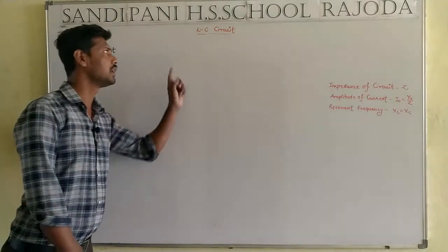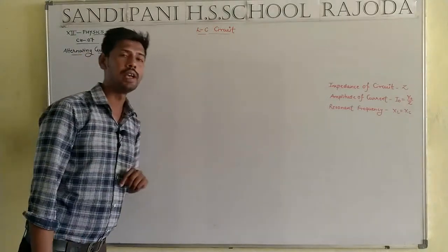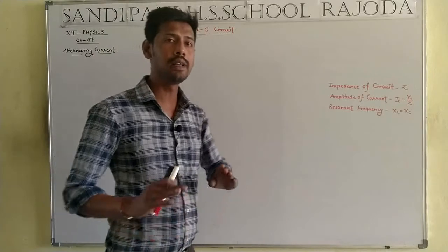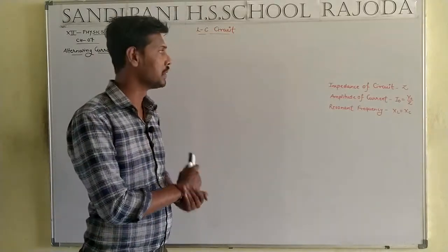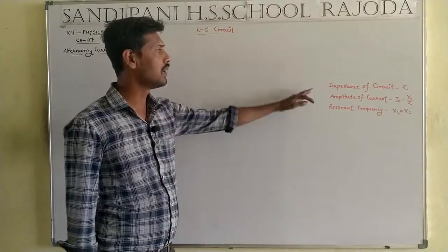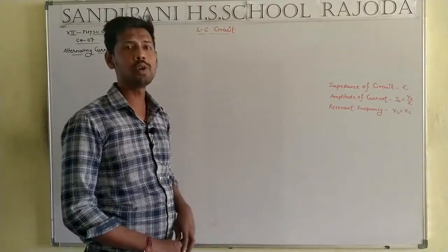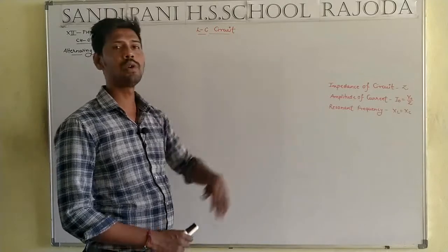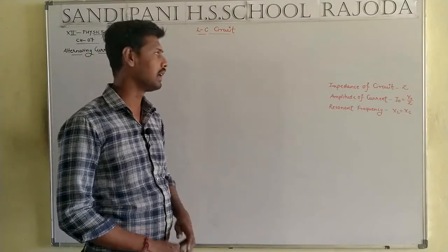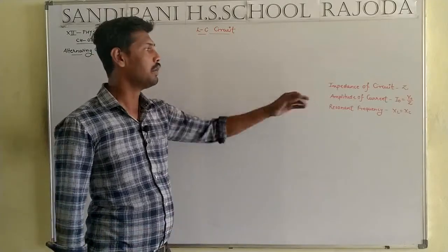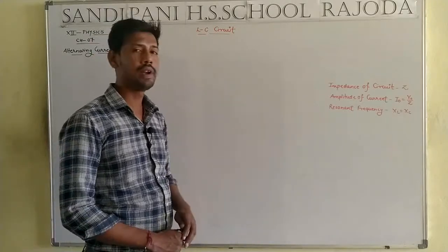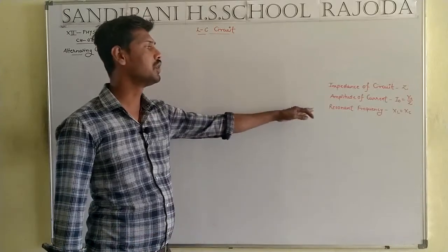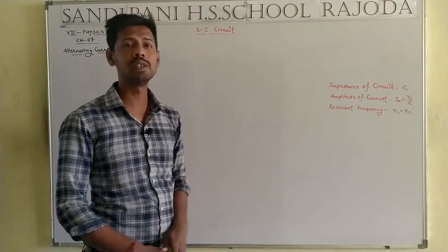Today's question: we find the LC circuit under the following points. First one, impedance of circuit, which will be equal to capital Z. Second, amplitude of current — that means the peak value. And third, resonant frequency.